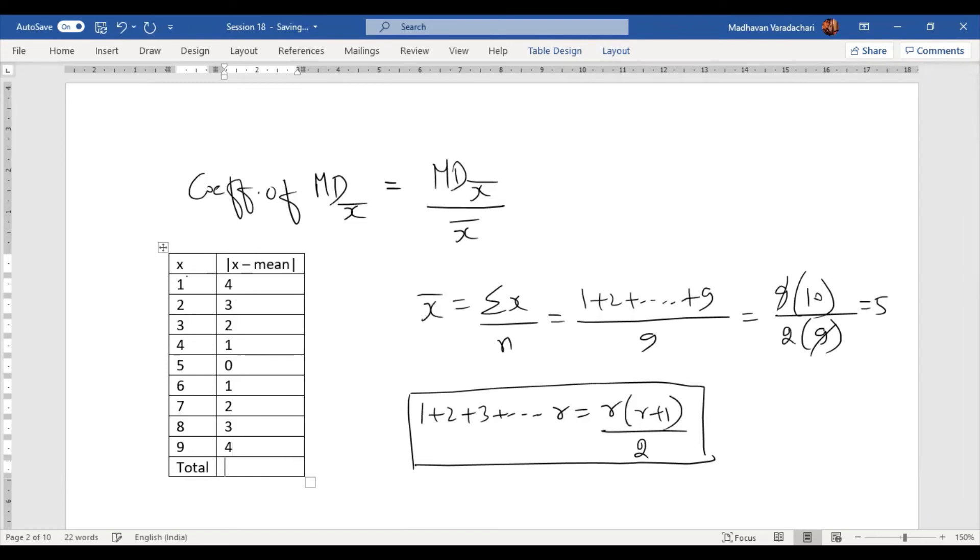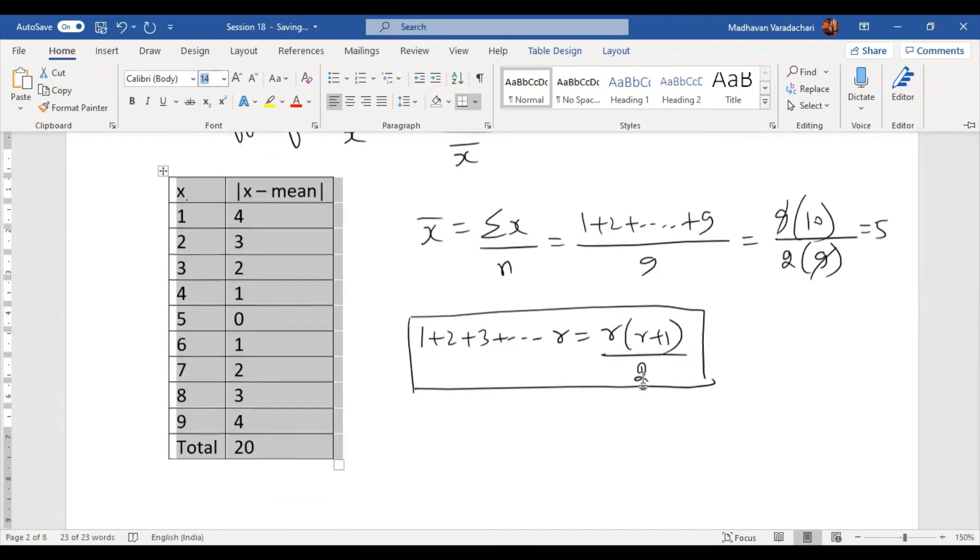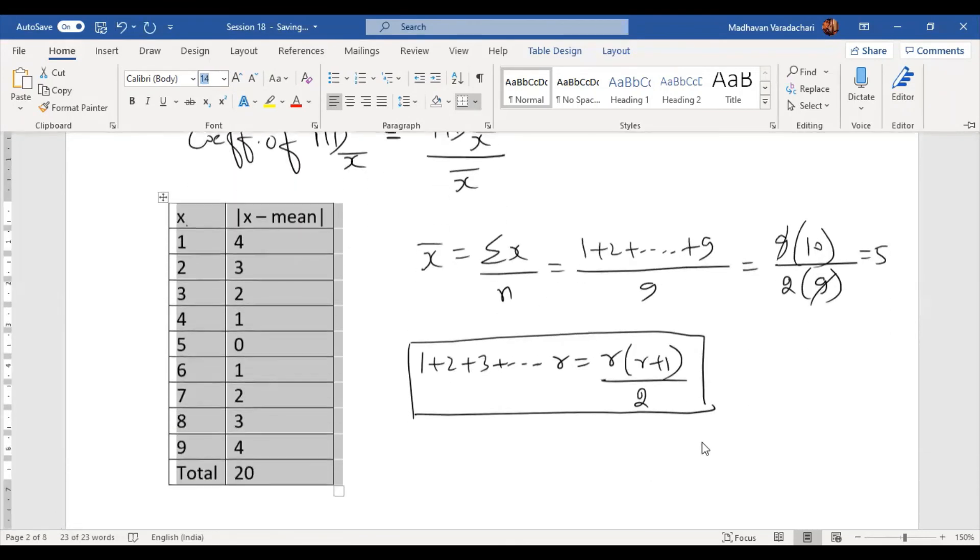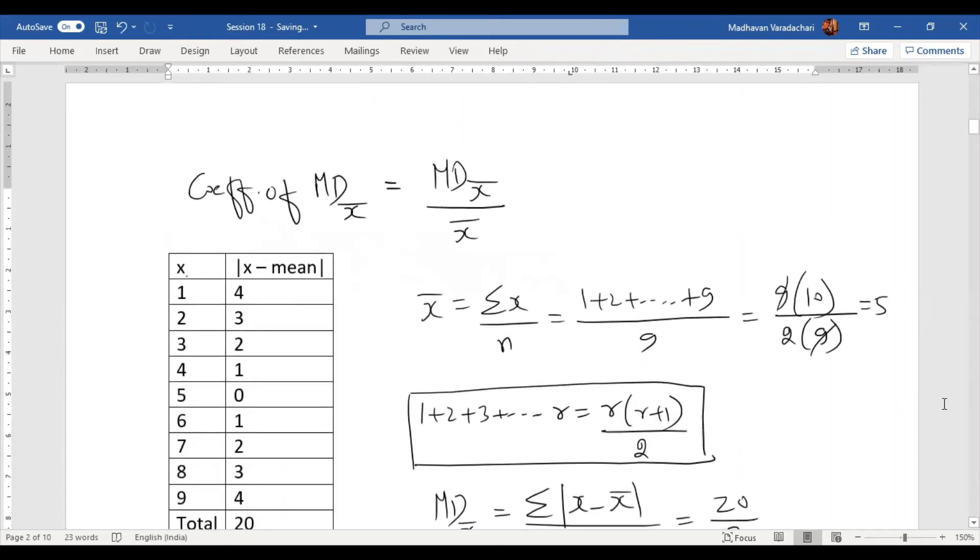Now we can find out what is mean deviation about mean, and that will be summation modulus of x minus x̄ divided by n, which is nothing but 20 divided by 9. So this is our mean deviation about mean.